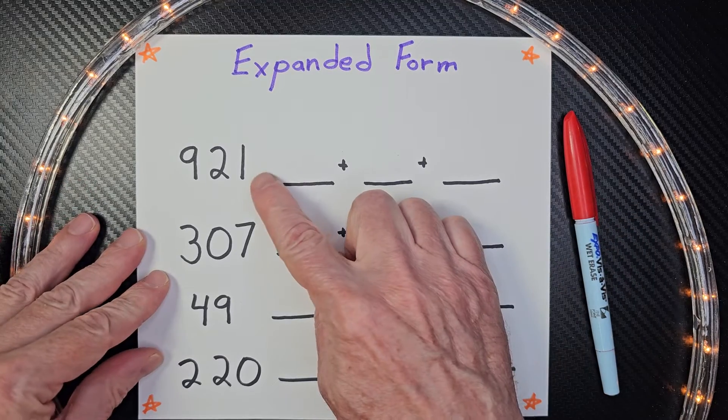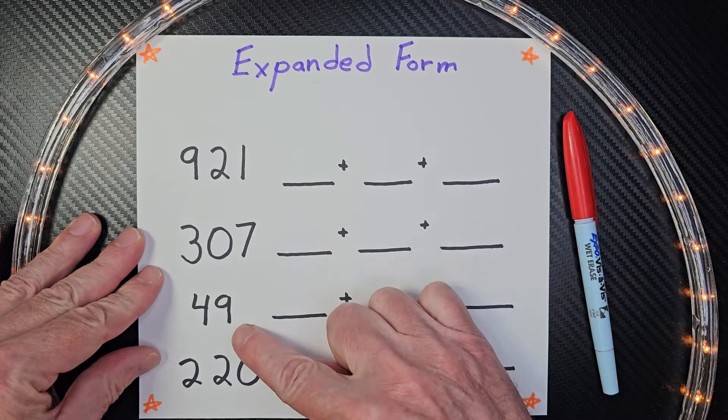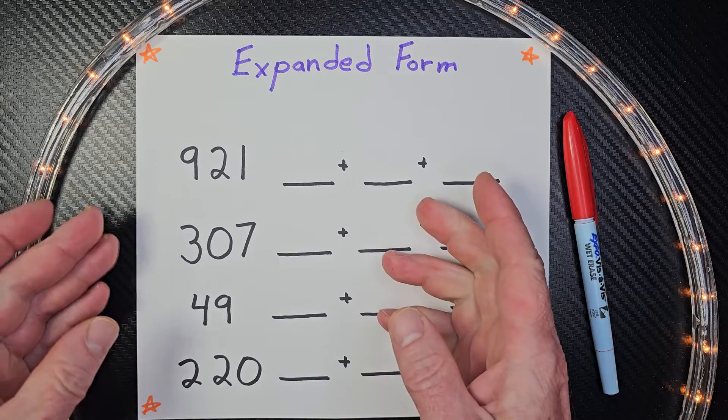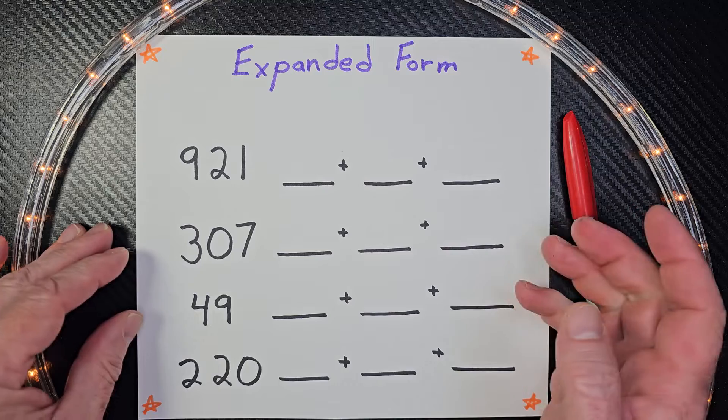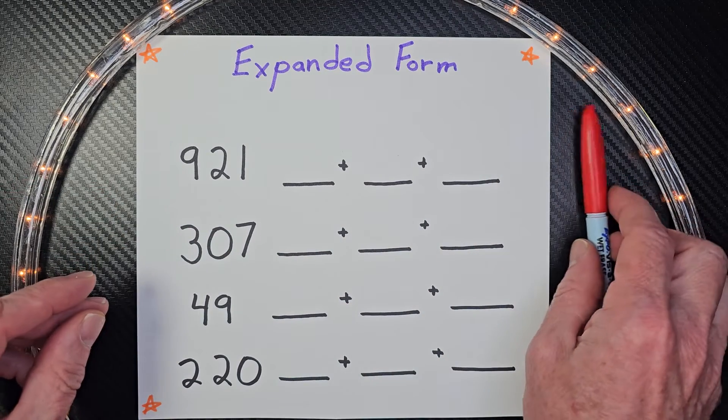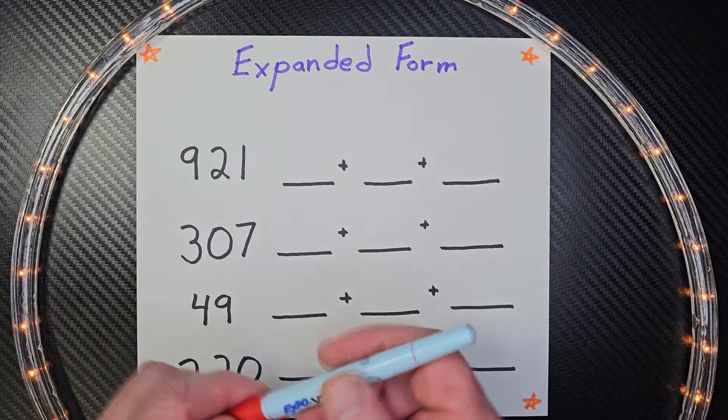Hey, welcome to the show. Today we're going to express these numbers in expanded form. When we do this, we're always going to start from the left and move to the right. Then we will expand out the number to show the value of each digit. All right, let's go ahead and begin.